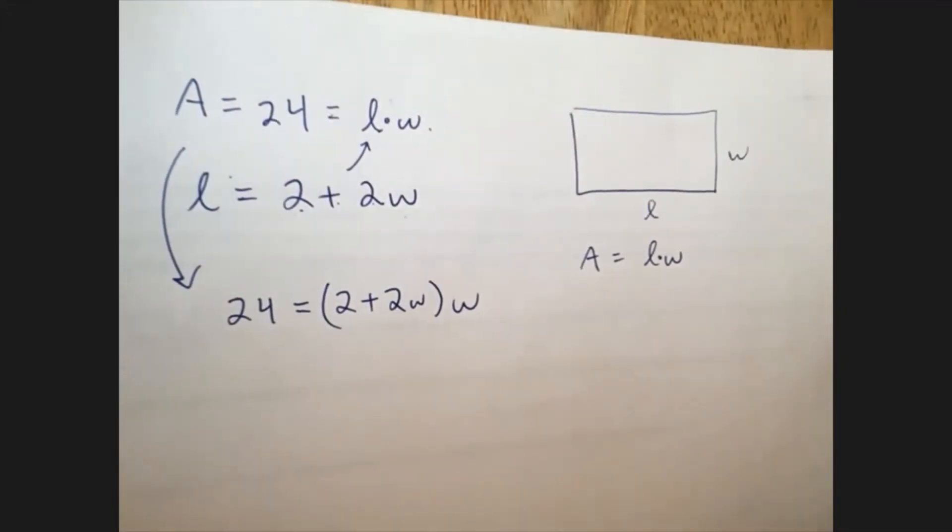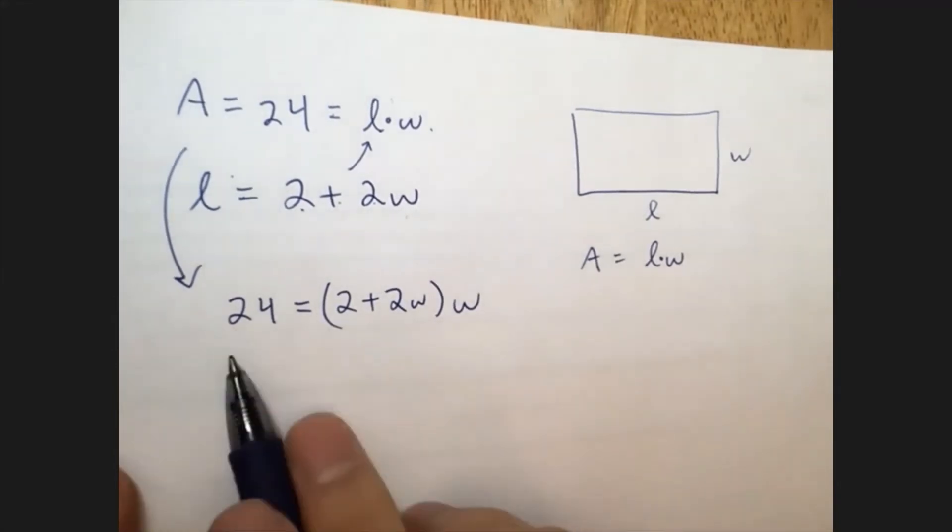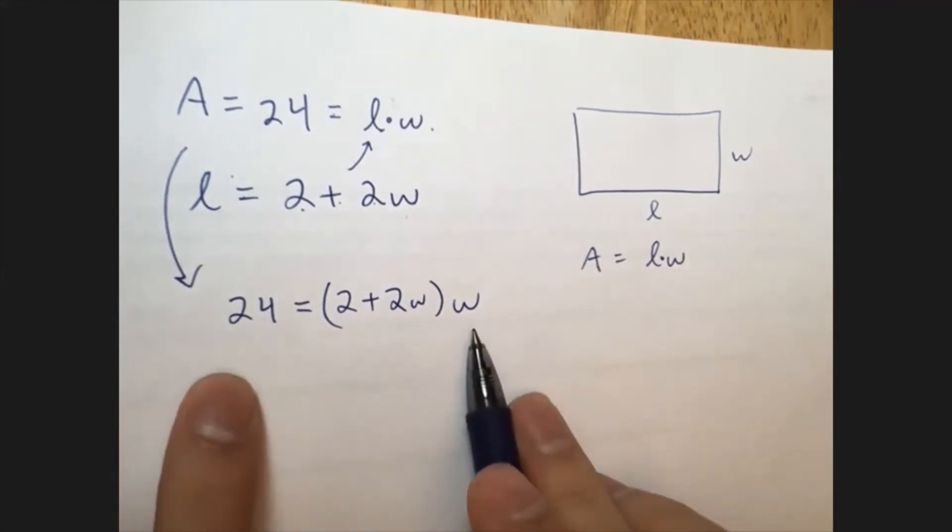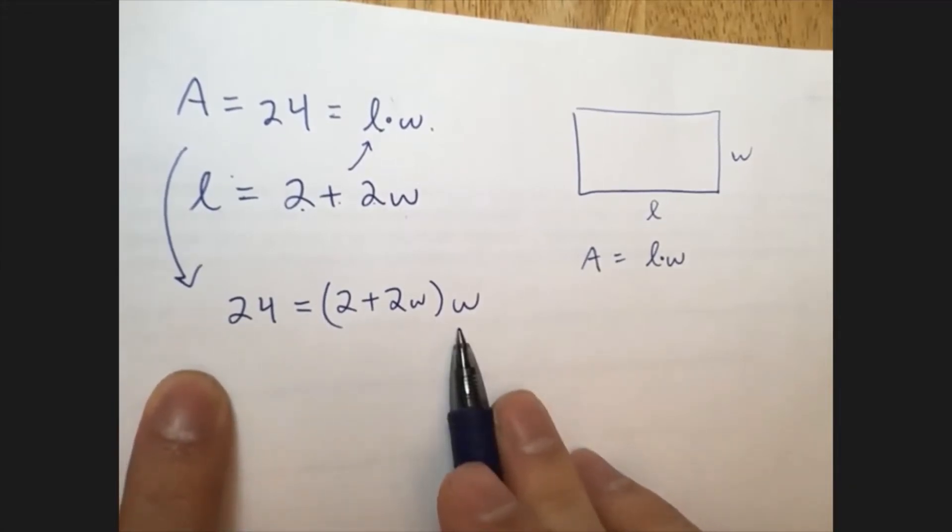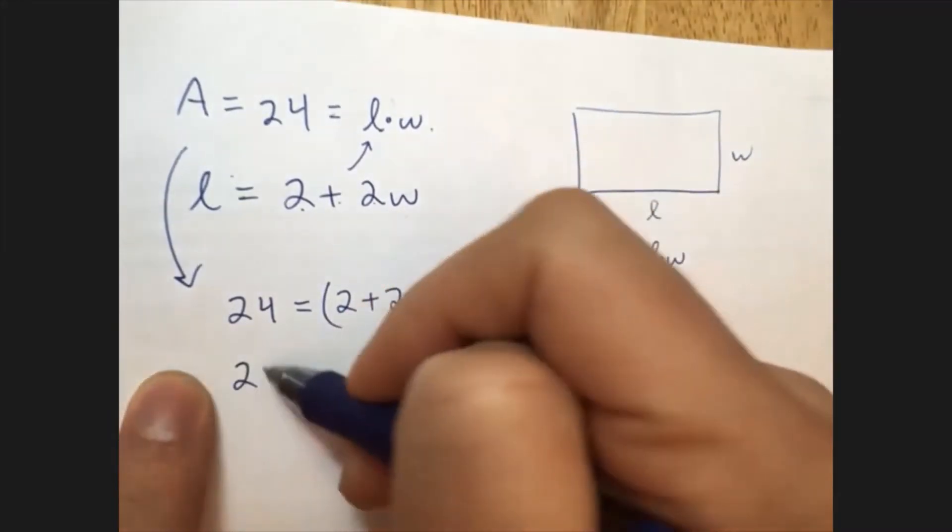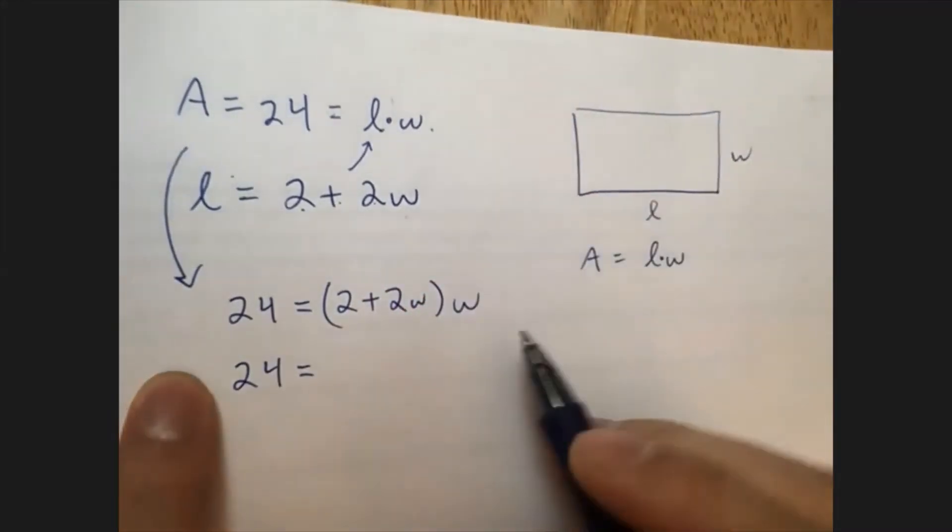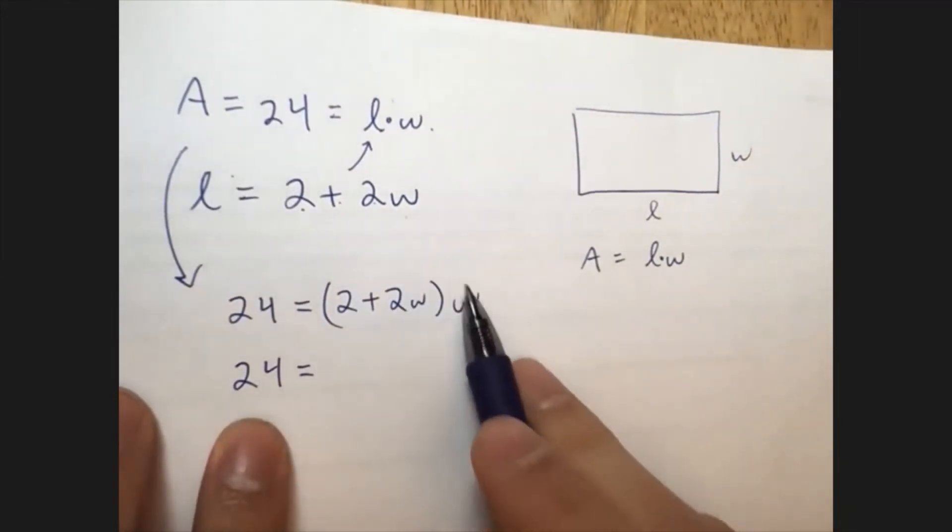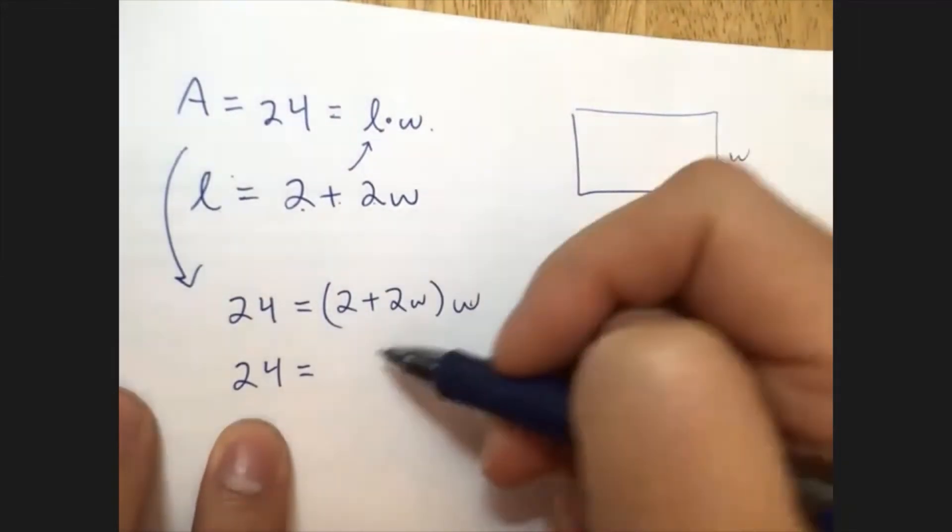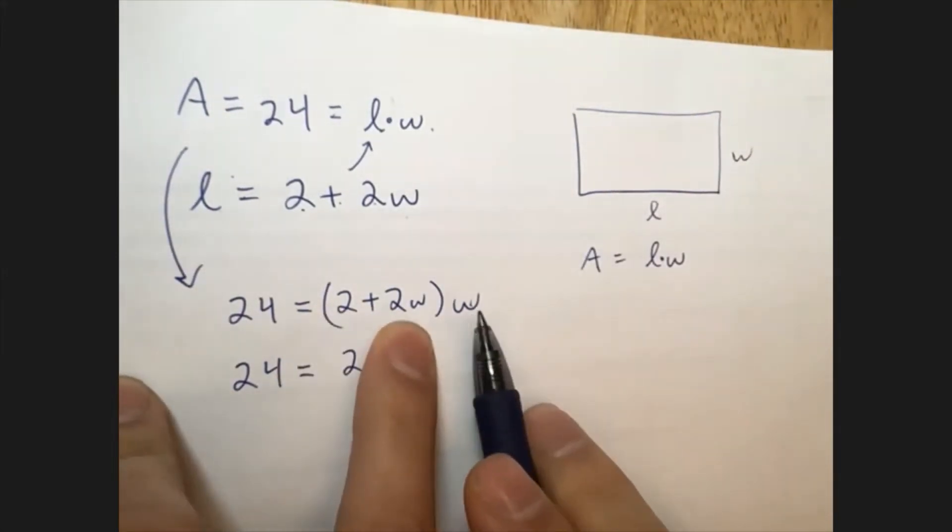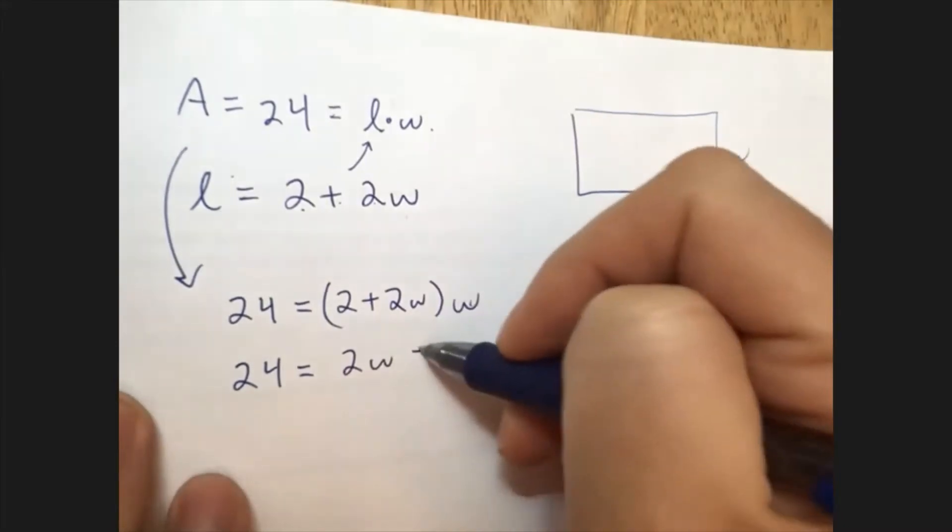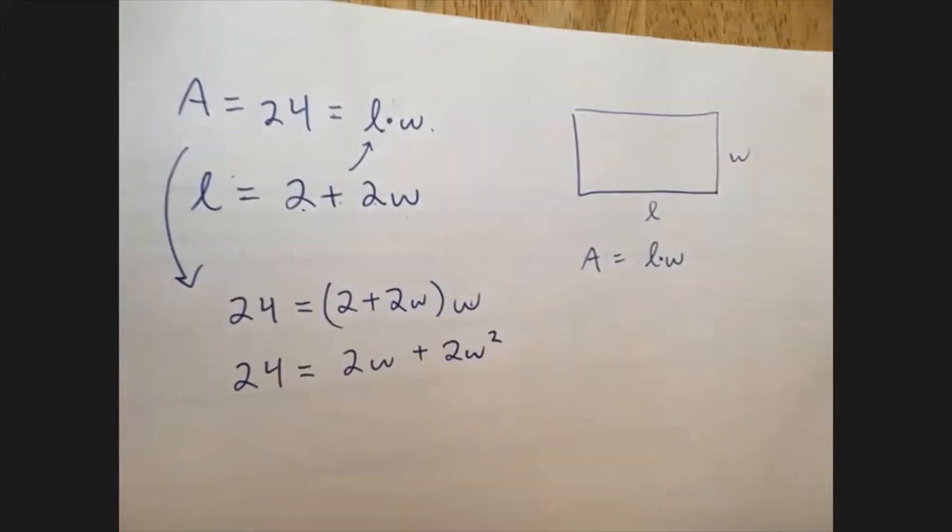And now I've got this equation, and this is great because this is a polynomial equation, and I know how to solve those. If I can get it into the standard form that we were working with before, I can work with this. So I can do that by distributing. So if I distribute the W across, I get 2 times W is 2W, and then 2W times W is 2W squared.